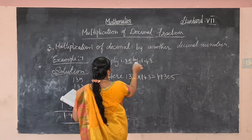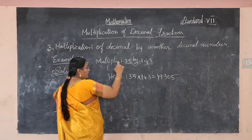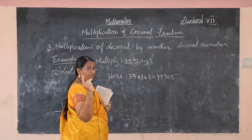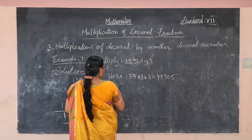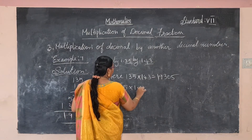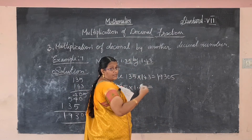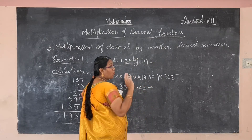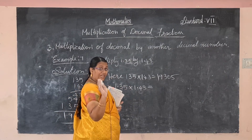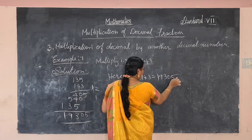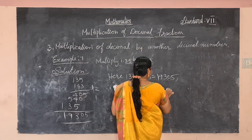How many decimal places after the decimal point in the two given numbers? The first number 1.35 has 2, and the second number 1.43 also has 2. Total decimal places is 4. So the decimal point moves from the right side by 4 places: one, two, three, four. The answer is 1.9305.